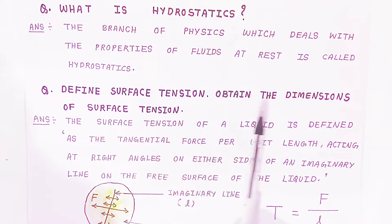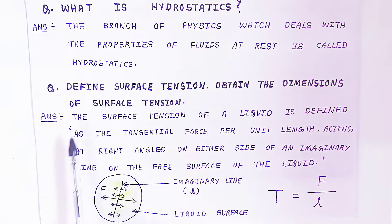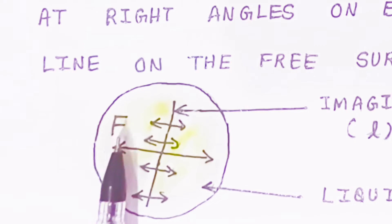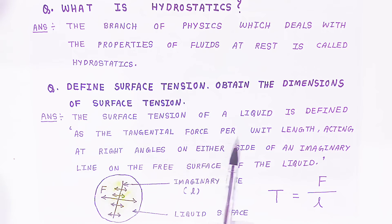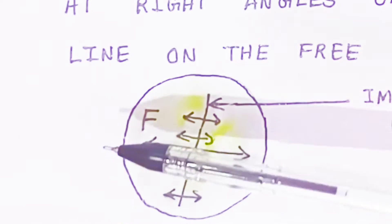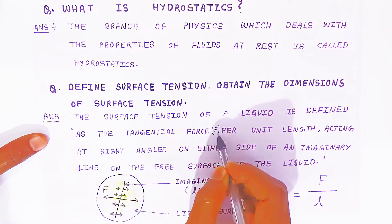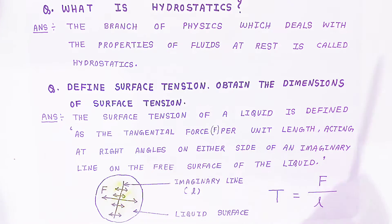Now another question for two marks: define surface tension and obtain its dimensions. The surface tension of a liquid is defined as the tangential force (capital F) per unit length (small l). This force acts tangentially along an imaginary line drawn on the liquid surface. So surface tension T equals force per unit length — the tangential force acting at right angles on either side of the imaginary line.